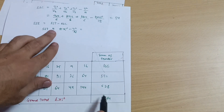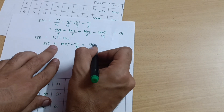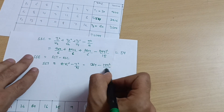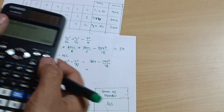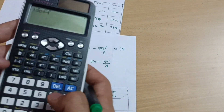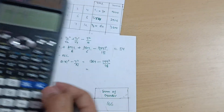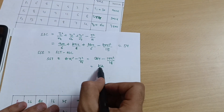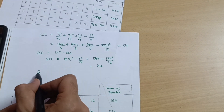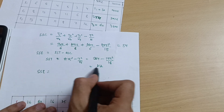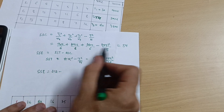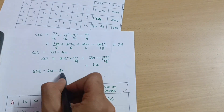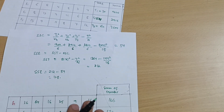The total summation of xi² is 166 + 570 + 628 = 1364. Now apply the formula: SST = summation of xi² − T² / n = 1364 − 144² / 18 = 212. So SST = 212.